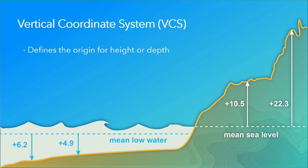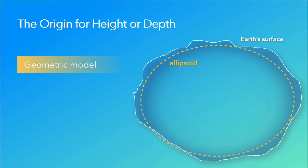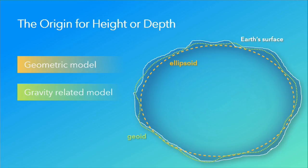A vertical coordinate system defines the origin for either height or depth from a standard value. Sometimes we're dealing with heights; in oceanography, we're dealing with depths. There are two kinds: a geometric model, which is based on the ellipsoid — a mathematical construct describing the shape of the globe — and a gravity-related model, such as a geoid, which is a lumpy, bumpy physical model, not a theoretical mathematical construct.